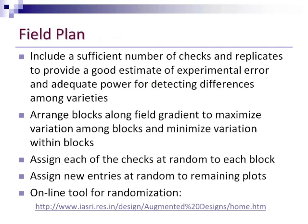In your field plan, you need to be sure to include a sufficient number of checks and replicates to get a reasonable estimate of experimental error, so you can detect differences among your varieties. As in any design, you'd want to arrange your blocks along the field gradient to get the most possible variation among blocks and minimize the variation within blocks.